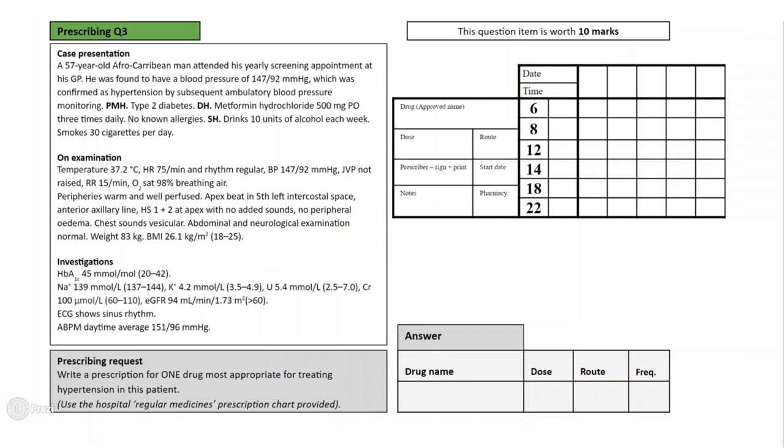His peripheries are warm and well perfused, and his apex beat was located within normal boundaries. Heart sounds were all normal and his breathing was vesicular. His abdominal and neurological examinations were normal, and he weighs 83 kilograms with a BMI of 26.1. Investigations found him to have normal U&Es, and his ECG showed sinus rhythm. Upon ambulatory blood pressure monitoring, he was found to have a raised average blood pressure of 151 over 96. So if we now look at the prescribing request again, it is asking you to write a prescription for one drug most appropriate for treating this patient's hypertension. Once again, you should pause here to think of your answer.